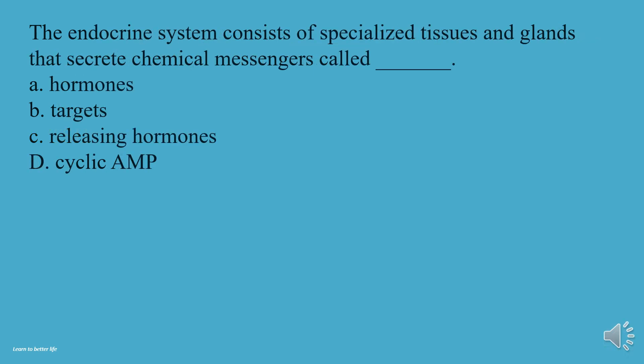The endocrine system consists of specialized tissues and glands that secrete chemical messengers called what? A, Hormones. B, Targets. C, Releasing hormones. D, Cyclic AMP. The answer is A, Hormones.